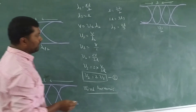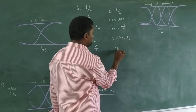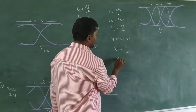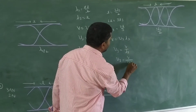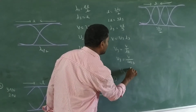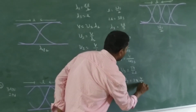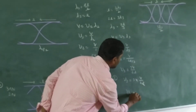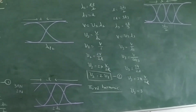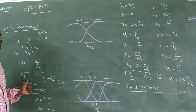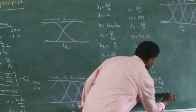We calculate the 3rd harmonic frequency using the wave velocity equation: V is equal to ν₃λ₃. So ν₃ is equal to V by λ₃. Substituting λ₃ equal to 2L by 3, we get ν₃ equal to 3V by 2L, which means ν₃ is equal to 3 into V by 2L. Since V by 2L is the fundamental frequency ν₁, we get ν₃ equal to 3ν₁. This is equation number 3.